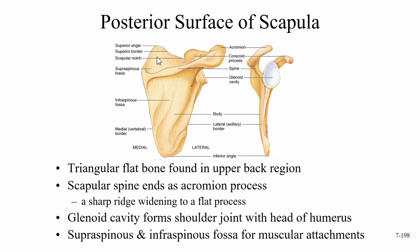Other structures on the scapula include the superior angle, the inferior angle, and a notch along the superior border called the scapular notch, where a neurovascular bundle passes through to innervate the muscles. The medial or vertebral border points medially, and the lateral or axillary border aims toward the armpit.